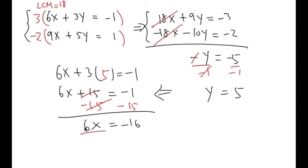Then I divide by the number in front of the x on both sides, which is 6. On the right-hand side, I can reduce this fraction. Using 2: 2 goes into 16 eight times, 2 goes into 6 three times. So x is negative 8 over 3.